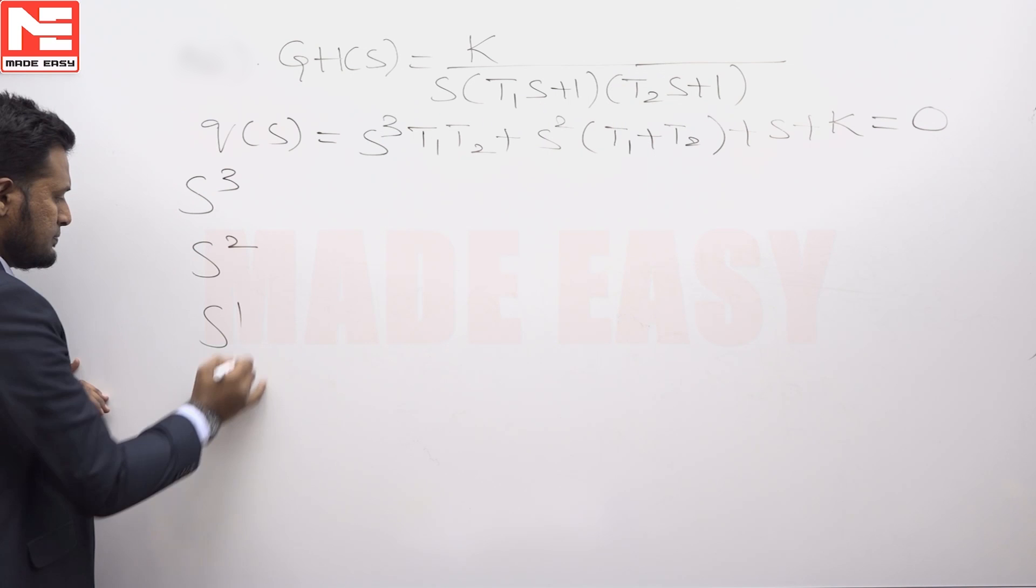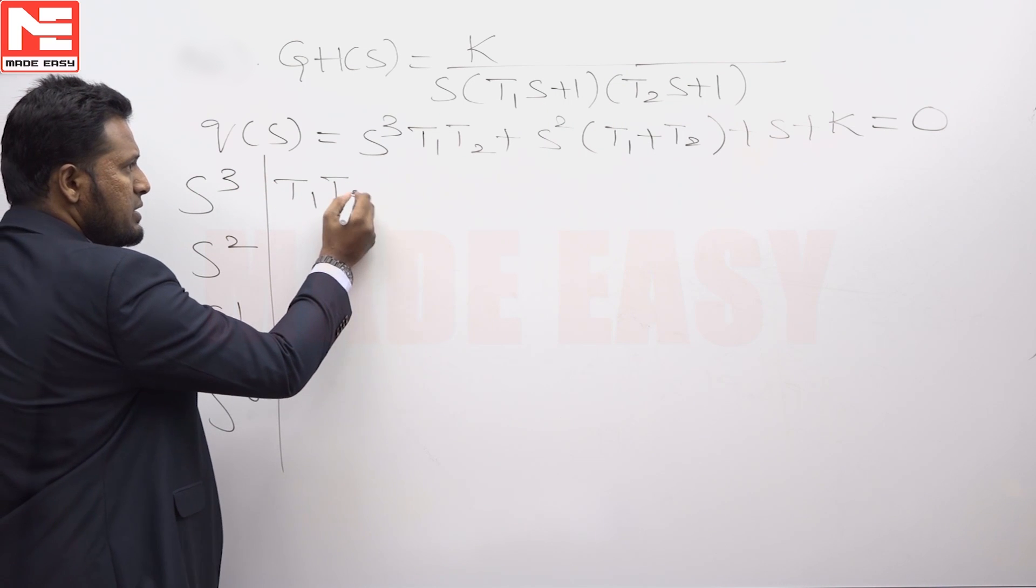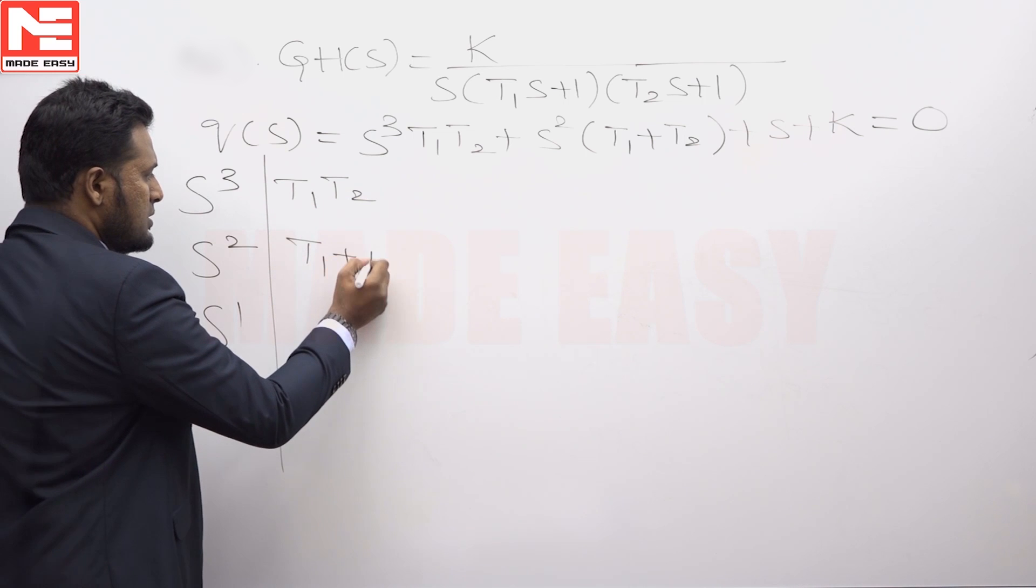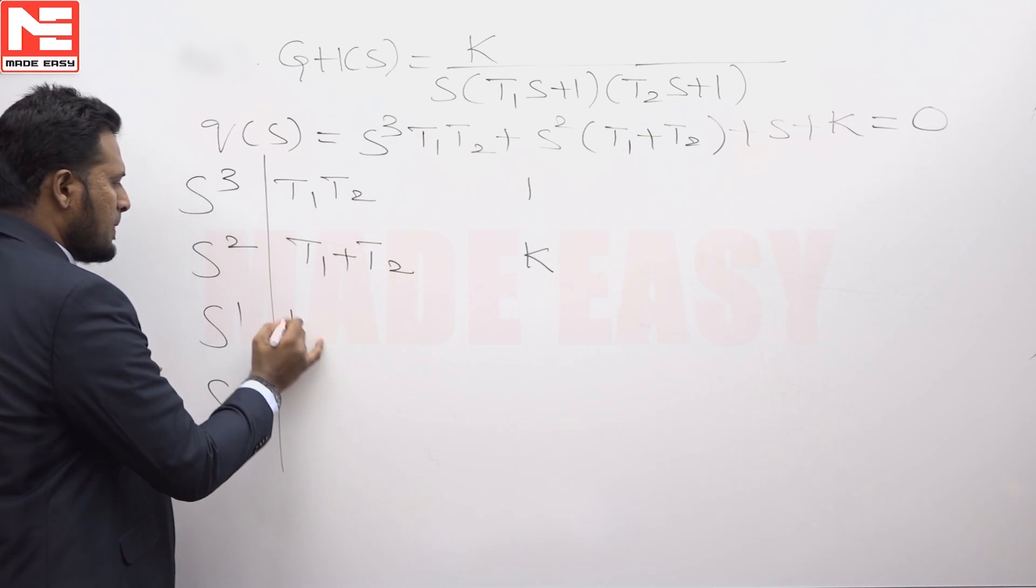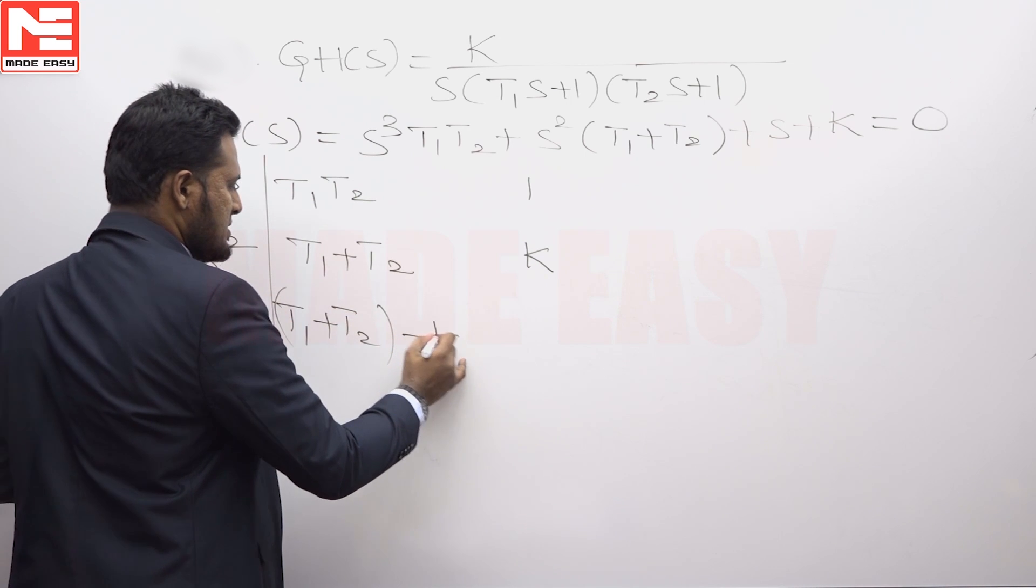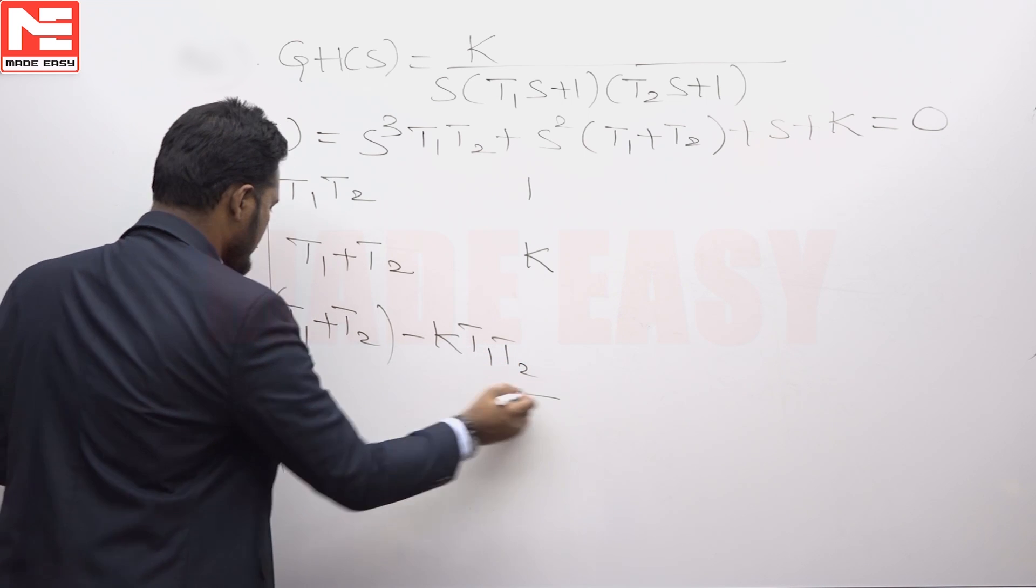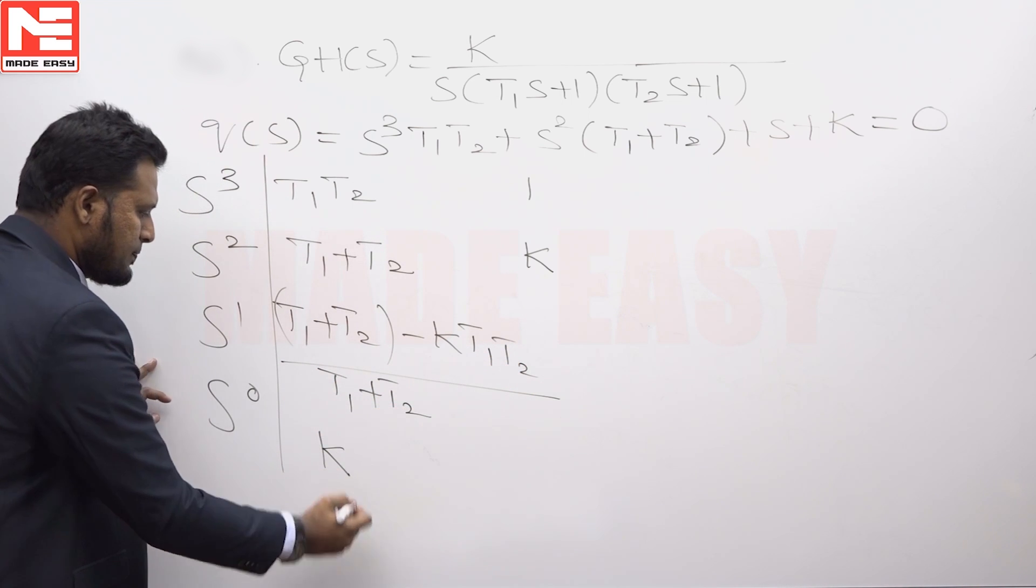Forming the Routh array: s³: T₁T₂, 1; s²: T₁ + T₂, k; s¹: (T₁ + T₂ - kT₁T₂)/(T₁ + T₂), 0; s⁰: k.